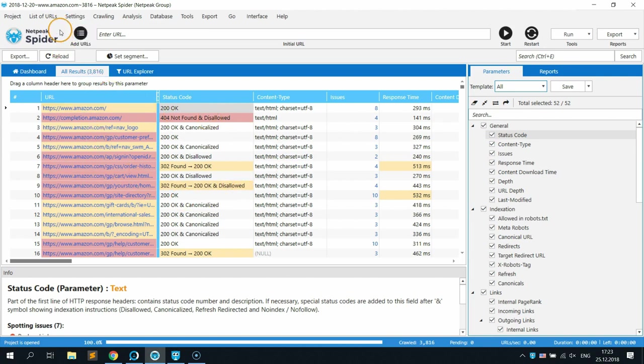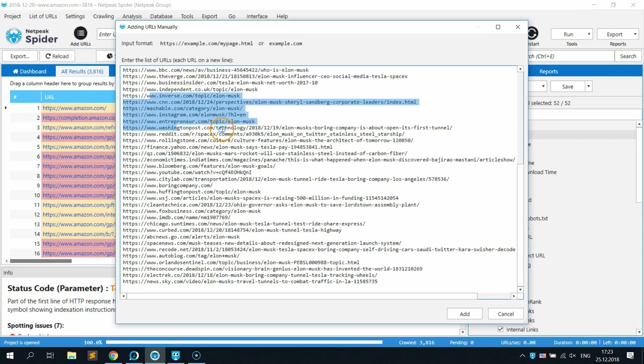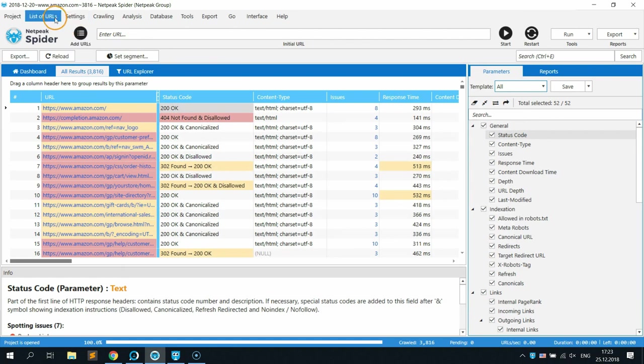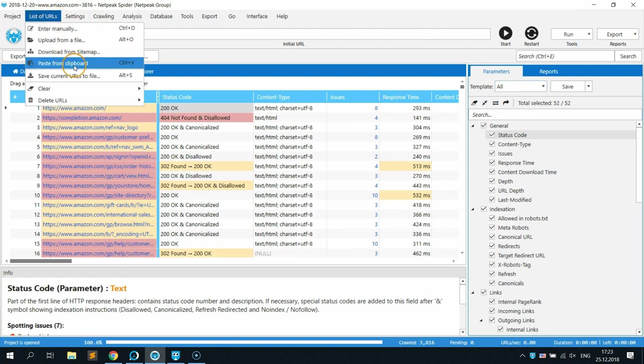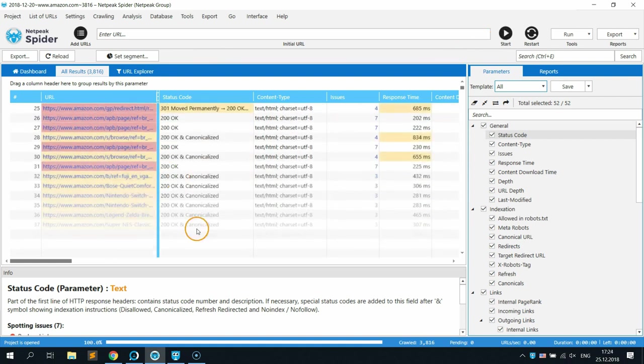If you have a task to make a bulk status code check of different websites, advertisements or just some specific pages, you can upload them to the program in three ways. First one is paste from clipboard. Second one is uploading from different documents of Excel, CSV, TXT or XML formats. Or also you can download them from a sitemap. After that, click on start and the tool will scan only this list of URLs.